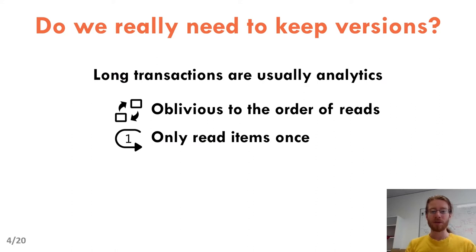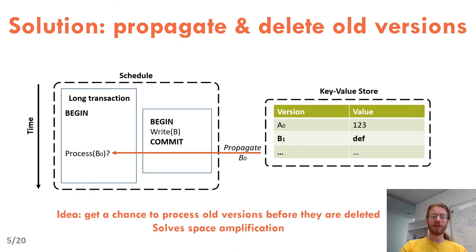So snapshot isolation is great to isolate long transactions from updates, but in this paper we question the need to keep old versions of data in the store. We make the observation that long transactions are usually analytic queries that are oblivious to the order they read data and that read data only once. The idea we propose is to propagate and delete old versions of items instead of keeping them in the store. When a transaction updates data, it creates the new version as it would have done under snapshot isolation, but once it's done committing, it propagates the old versions to other transactions and then deletes them. At the end, the store only contains the new versions, so space amplification is limited.